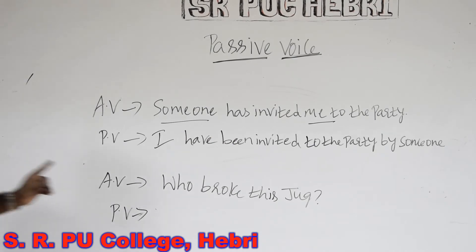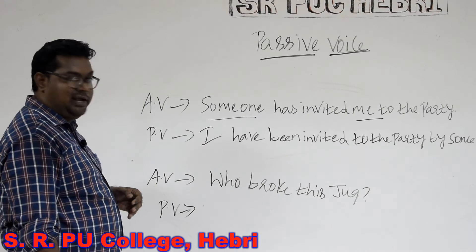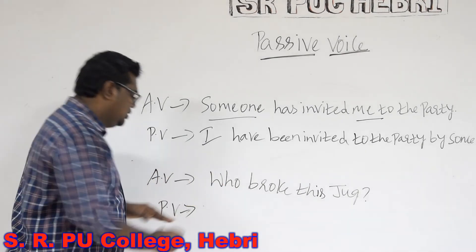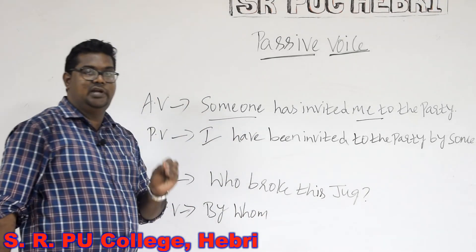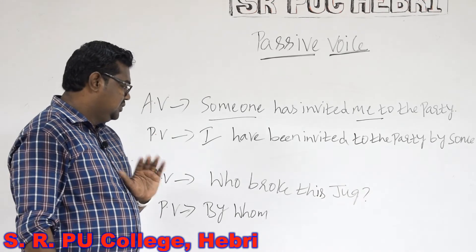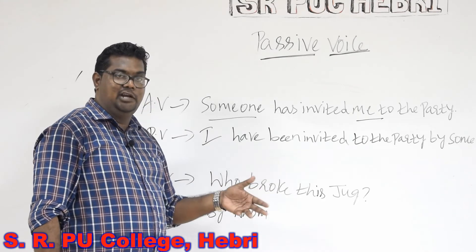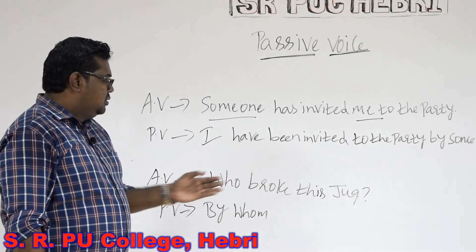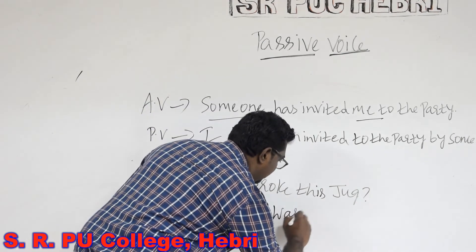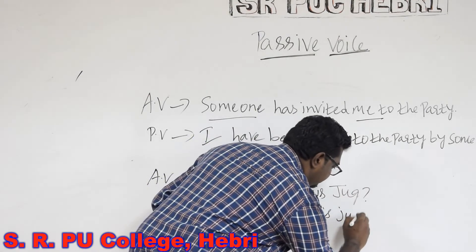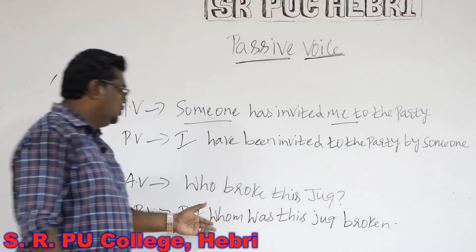Next interrogative sentence: Who broke this jug? Same rule — first the preposition 'by', then 'who' has to be changed to 'whom'. Then we write the auxiliary verb based on the tense. The main verb is 'broke' and it is in simple past tense. The auxiliary available for this sentence is 'was'. So: 'By whom was this jug broken?' — using 'broken' as the past participle of 'broke'.